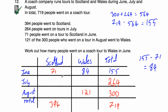You could have filled in the boxes in a different order. Wales total: 719 minus 394 equals 325. Scotland in August: 300 minus 121 equals 179. Scotland in July: 394 minus 179 minus 71 equals 144. Wales in July: 264 minus 144 equals 120. Then Wales in June: 325 minus 121 minus 120 equals 84. Either way, the answer is 84.